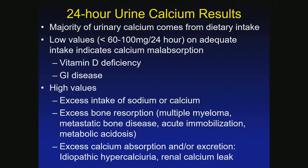The majority of urinary calcium comes from dietary intake. Low values suggest vitamin D deficiency or GI disease. High values can indicate too much salt, sodium, protein, or calcium supplementation. It can also indicate excess bone resorption from myeloma, metastatic bone disease, or acute immobilization — patients in automobile accidents who are immobilized can have very high calcium. There are also patients with idiopathic hypercalciuria and renal calcium leaks.